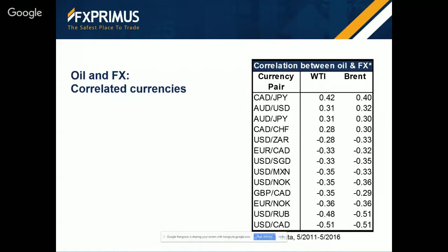The yen seems to weaken when oil prices go up, particularly in cross rates like CAD-yen and Aussie-yen more than in dollar-yen or euro-yen. That could be because since the Fukushima disaster, Japan shut down its nuclear power stations and has had to import large amounts of oil, which reduced its current account surplus.